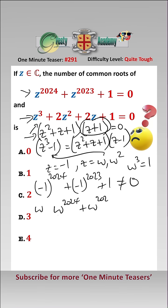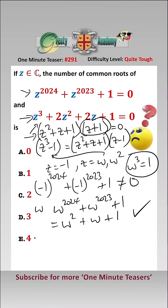Putting omega in gives us omega to the 2024 plus omega to the 2023 plus 1, which equals omega squared plus omega plus 1. Remember, omega cubed is equal to 1, so that is a common root.